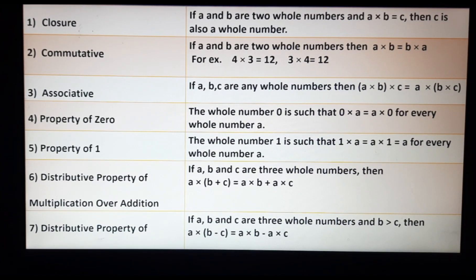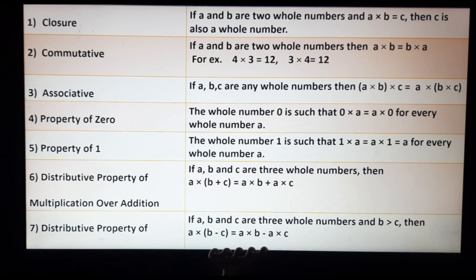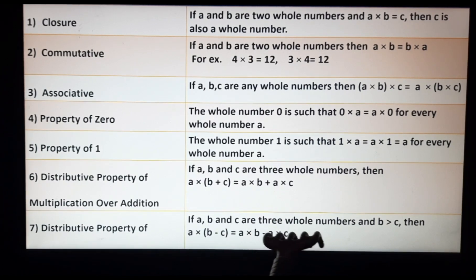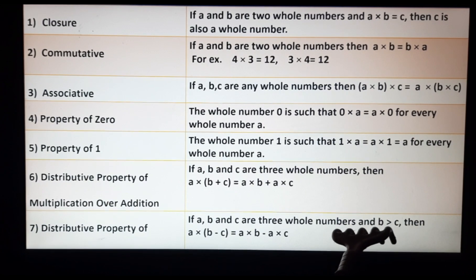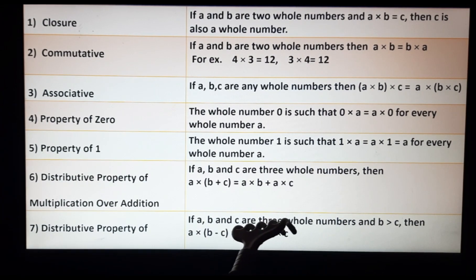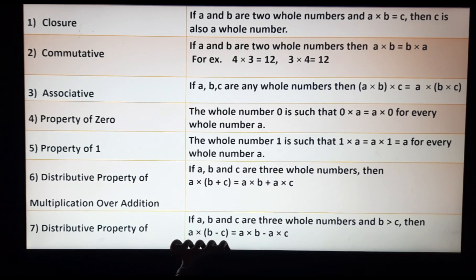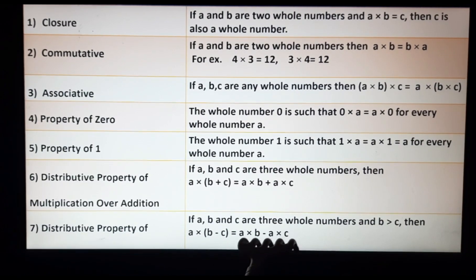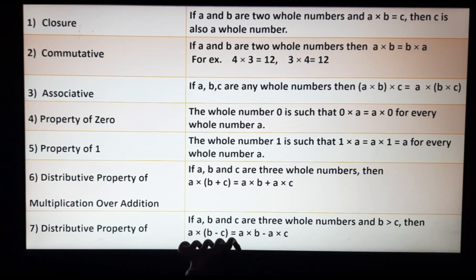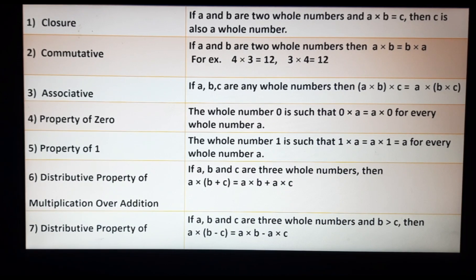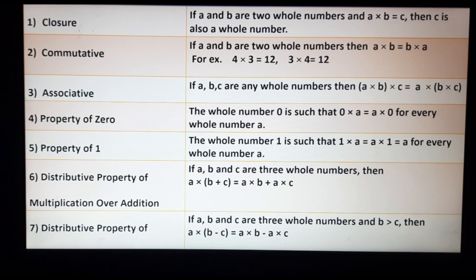And the seventh property is the distributive property of multiplication over subtraction. For three whole numbers, a × (b − c) = a × b − a × c. In both sides the result will be the same. So these were all the properties that we will use in exercise 2D.